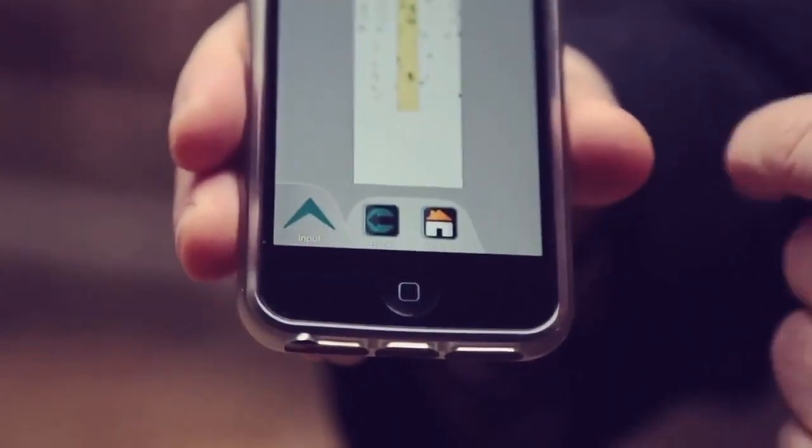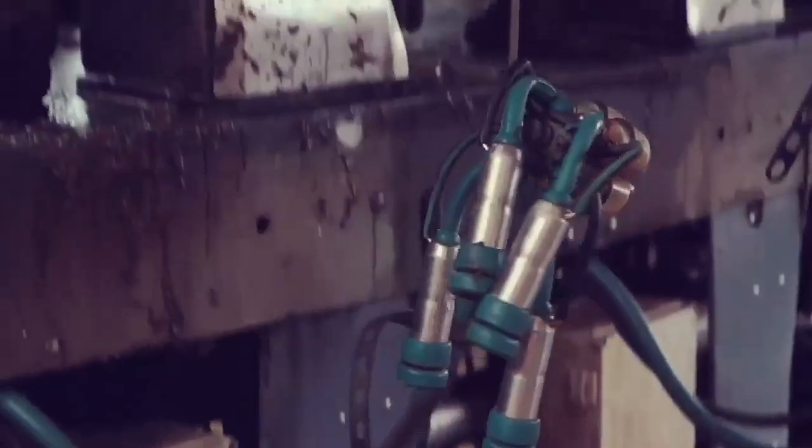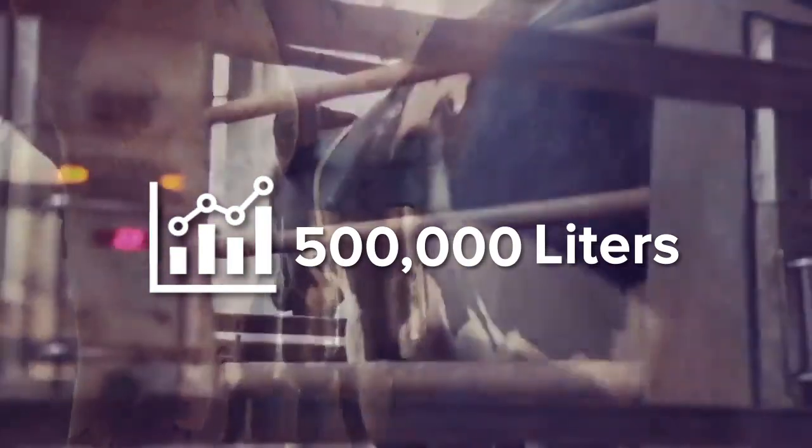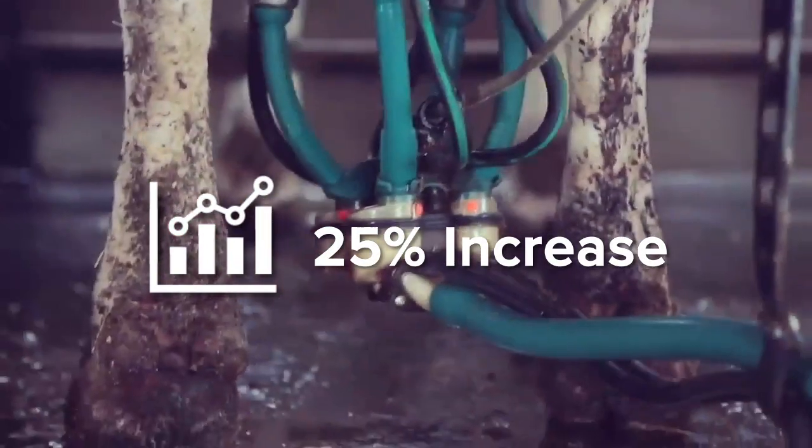By implementing this tracking and analytics technology, milk production at one farm went from 400,000 liters to 500,000 liters, an increase of 25%.